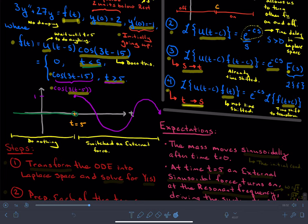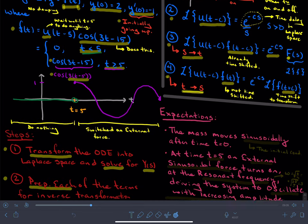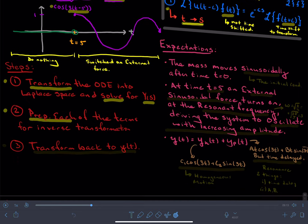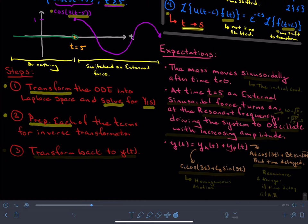So what are going to be the steps? Step 1, we will transform the ODE and we will solve for Y of S. Step 2, that's really the step where we try to massage the terms into things that are readily accessible on the Laplace transform table. And then step 3, ultimately we transform back to Y of T.